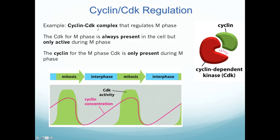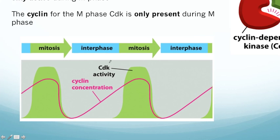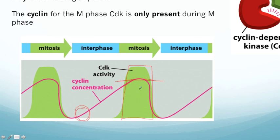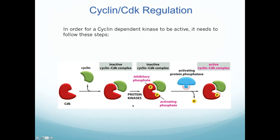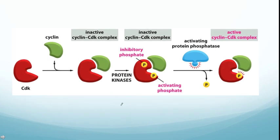Here's an example of the cyclin and cyclin-dependent kinase complex that regulates mitosis. The CDK is always present in the cell, but kinase activity is only active when the associated cyclin concentration reaches a certain threshold. When there isn't much cyclin present to bind to the mitosis CDK, there's no CDK activity, because the cyclin must be present for the cyclin-dependent kinase to be turned on. Once the cyclin is made at the appropriate phase, it can then turn on its associated CDK. It's not just the presence of the cyclin alone — that has to be the first step.